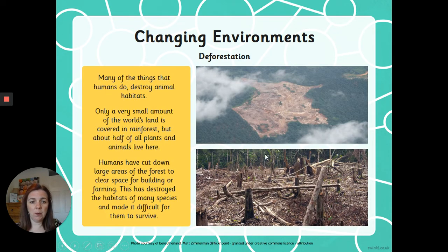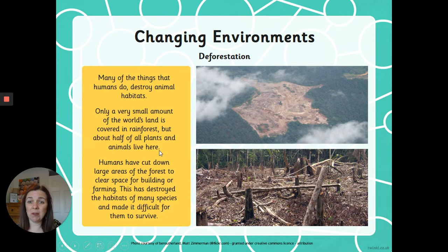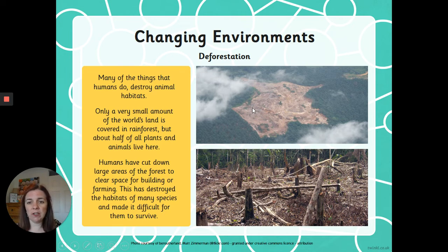Do you know the word for where they chop all the trees down? Deforestation — great word, put it in your word bank. Many of the things that humans do destroy animal habitats. Only a very small amount of the world's land is covered in rainforest, but about half of all plants and animals live there. Humans have cut down large areas of forest to clear space for building or farming, and this has destroyed the habitats of many species, making it very difficult for them to survive.